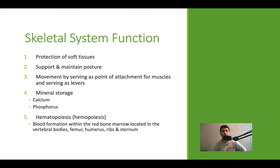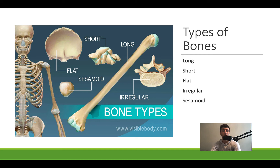Another function is hematopoiesis. Inside certain types of bones you have bone marrow, and that bone marrow is the primary site for the creation of blood cells — red blood cells specifically. This occurs inside bones like the femur and humerus, and in small amounts inside the ribs and sternum. So bones are very important structures that require quite a bit of study and respect.